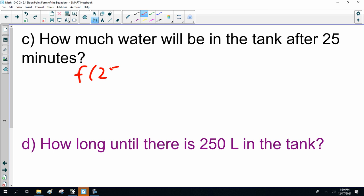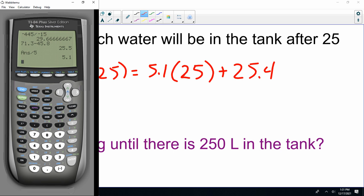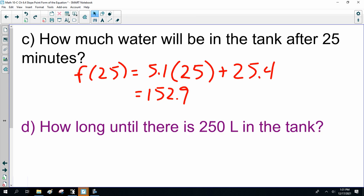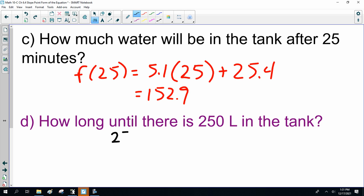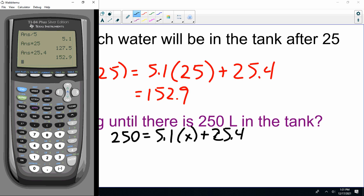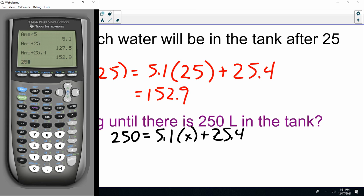Which leads to a couple questions. After 25 minutes, 5.1x times 25 is 127 plus 25.4 is 152.9. And when will there be 250 liters in the tank? Well, that's 250 is 5.1x plus 25.4.